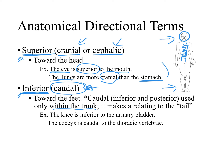Examples for the term inferior: the knee is inferior to the urinary bladder, because the urinary bladder is within the pelvic cavity, and the knee is between the thigh and the leg. Another example is that the coccyx is caudal to the thoracic vertebrae — it is inferior and caudal to the vertebrae at the thoracic cavity level.